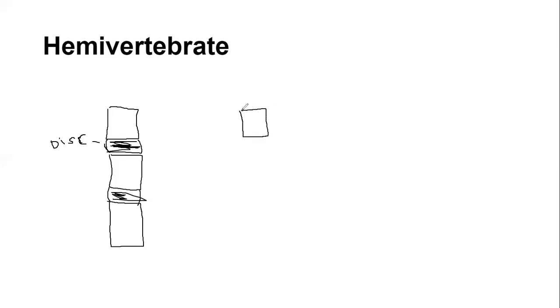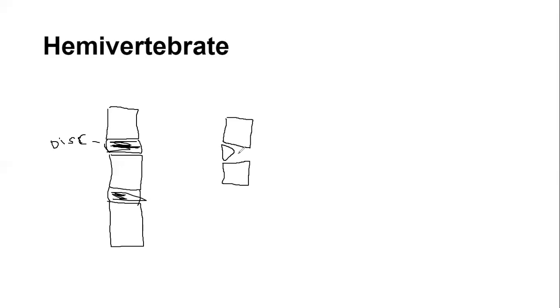What happens when you have a hemivertebrae is instead of having these vertebrae stacked up evenly, you get a hemivertebrae shaped like this, which throws off the vertebrae above it. There is still room for the disc in here, and sometimes it may affect the disc below too. This creates curvature of the spine — as I mentioned in the scoliosis video, a hemivertebrae can actually cause scoliosis.